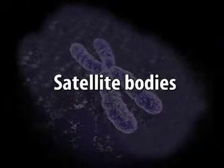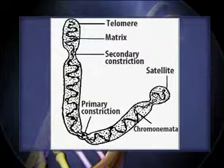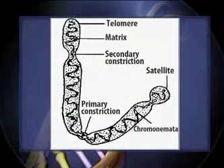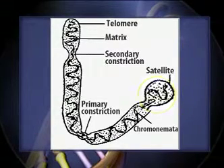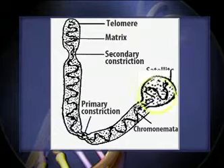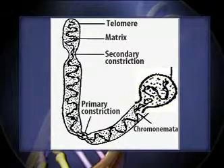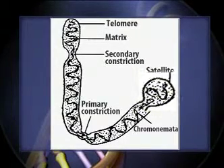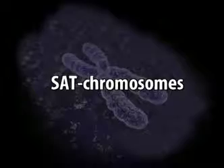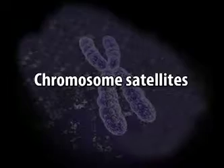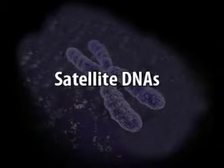Satellite bodies: the part of the chromosome which is present beyond the secondary constriction is called the satellite body. The satellite body appears as a rounded or knob-like appendage and varies in size according to the position of the secondary constriction. The satellites remain connected with the rest of the chromosome by a thin chromatin filament. Chromosomes bearing satellites are called SAT chromosomes. Chromosome satellites should not be confused with satellite DNA, which are highly repeated DNA sequences.